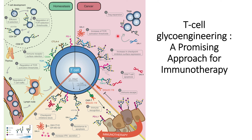One strategy is to use CAR T cells with Siglec-7/9 receptors, which has been found to increase immune recognition of tumor cells. Additionally, increasing alpha-2,6-sialic acid levels can prevent galectin-1 interactions with T regulatory cells, thereby reducing the threshold increment and preventing T cell apoptosis.